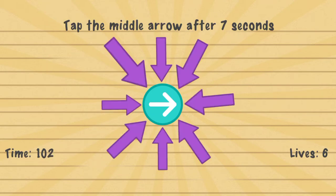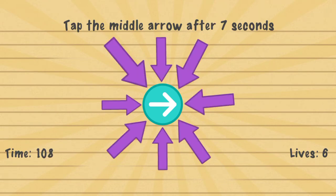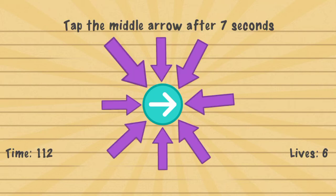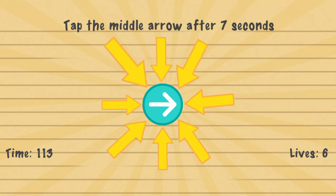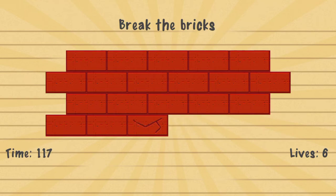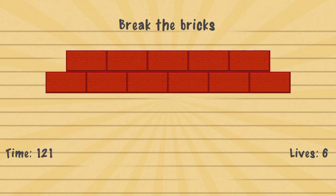Tap the middle arrow after seven seconds — you just have to wait seven seconds, or you can look at your timer and count seven seconds as it goes by. Tap it. Break the bricks — you have to tap each brick. To break a brick, you tap it twice.